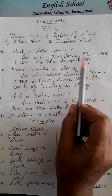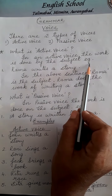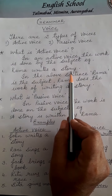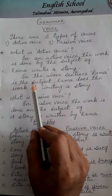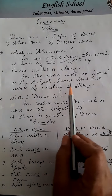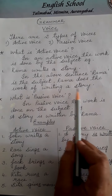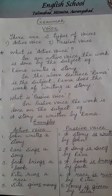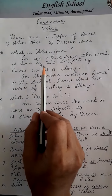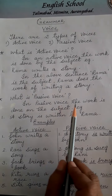In an active voice, the work is done by the subject. Example: Rama writes a story. In this sentence, Rama is the subject — Rama does the work of writing a story. This was about the active voice. What is passive voice?